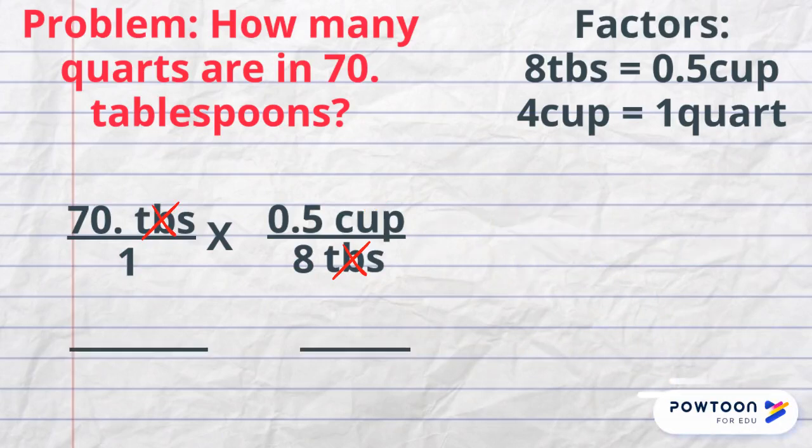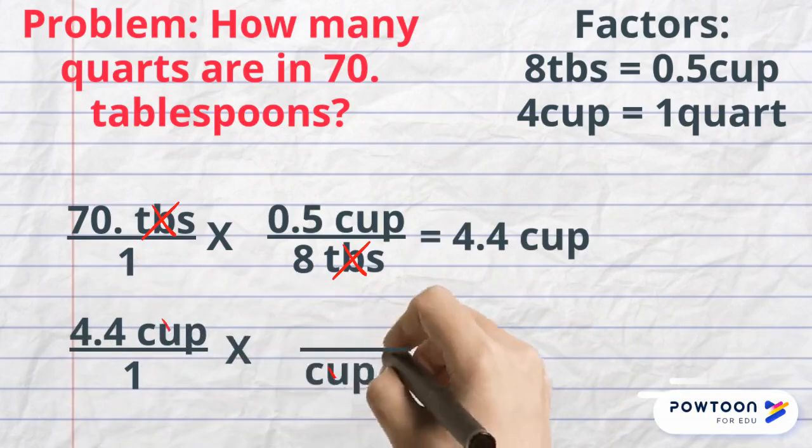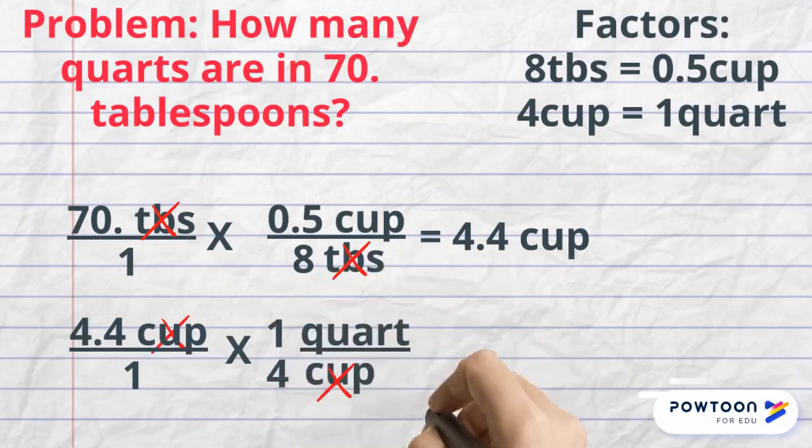In this case, you solve for cups first, then put your answer with units over one and multiply by the next factor, and the results will be the same.